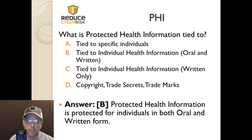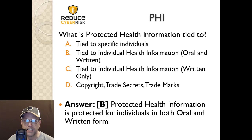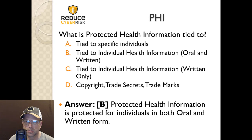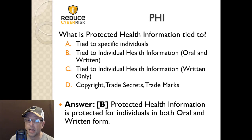Alright, let's get going. Question one: What is protected health information tied to? A) Tied to specific individuals, B) Tied to individual health information, oral and written, C) Tied to individual health information, written only, or D) Copyright, trade secrets, or trademarks. Again — what is protected health information tied to?